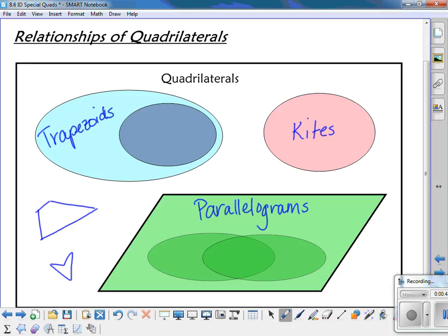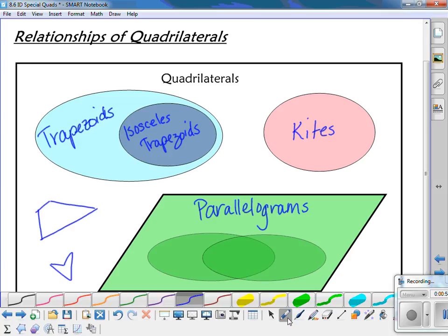So within trapezoids, we have some special ones. Those are the isosceles trapezoids. Kites, there aren't any special kinds of kites.